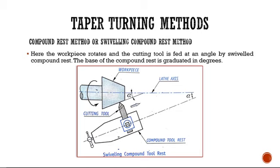In the compound rest method, or swivelling compound rest method, the compound rest is tilted to the required angle alpha. Then, using the hand lever on the compound slide, the direction is gradually applied. While the workpiece rotates against the angular cutting tool, material is removed as metal chips, and angle alpha is directly imparted on the workpiece, forming a conical shape.